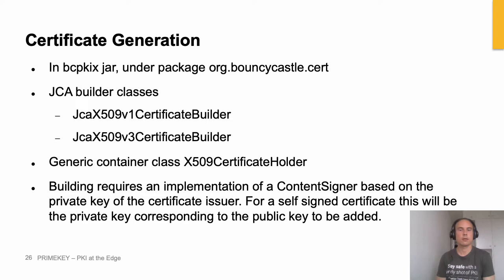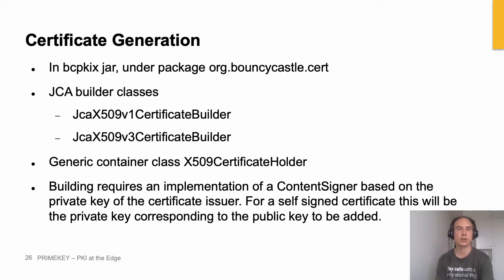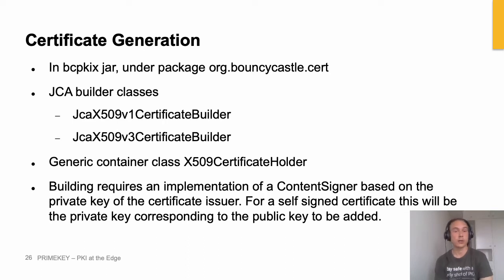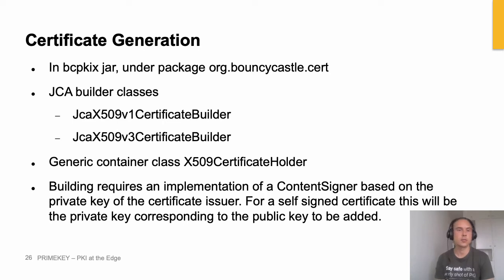To summarize: you pick the certificate format — version one or version three, most likely version three, that will always work. If you're creating a trust anchor you can pick version one, but let's say version three. You create your ContentSigner and load it with the private key of the certificate authority. Then you basically call the build method of the certificate builder, pass in your ContentSigner, and out comes your certificate.